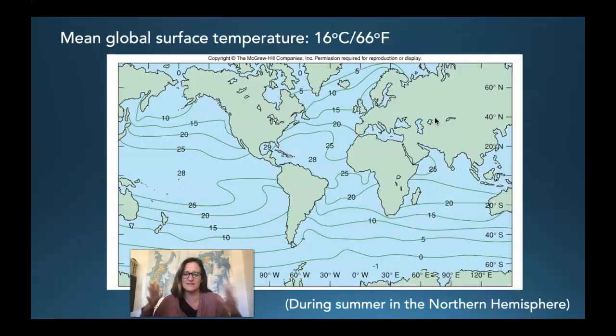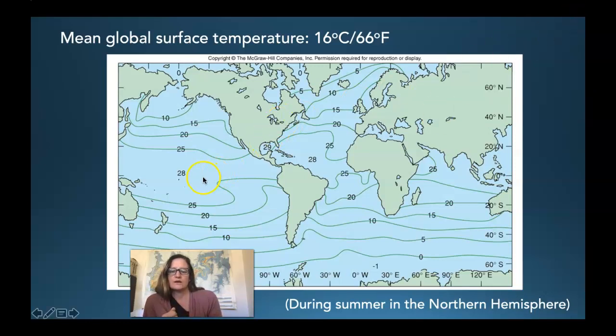What that gives us because of the differential heating is a wide range of surface temperatures. Here's global surface temperatures, and we're just looking at the ocean basins in this image. This is in degrees Celsius.